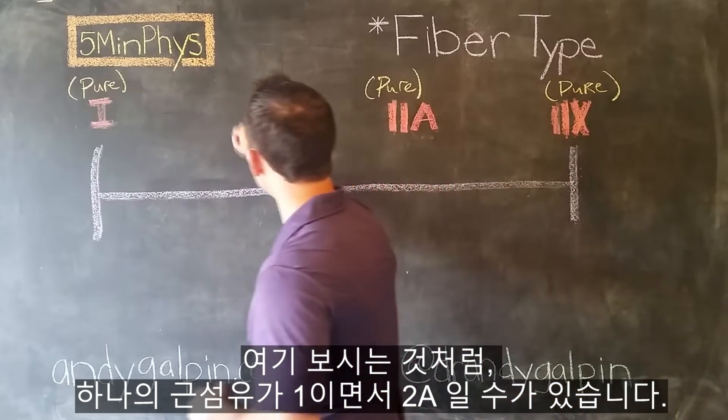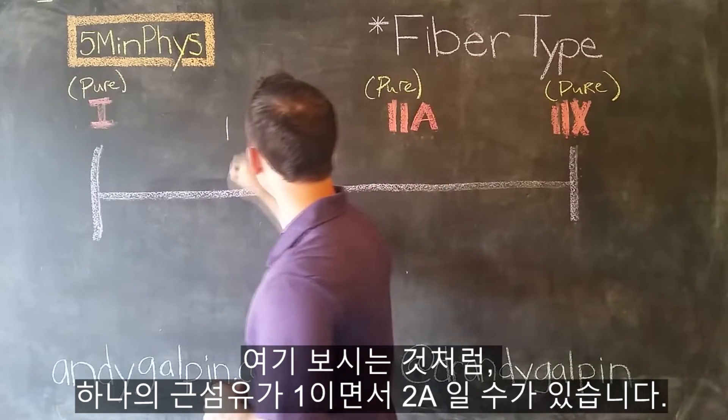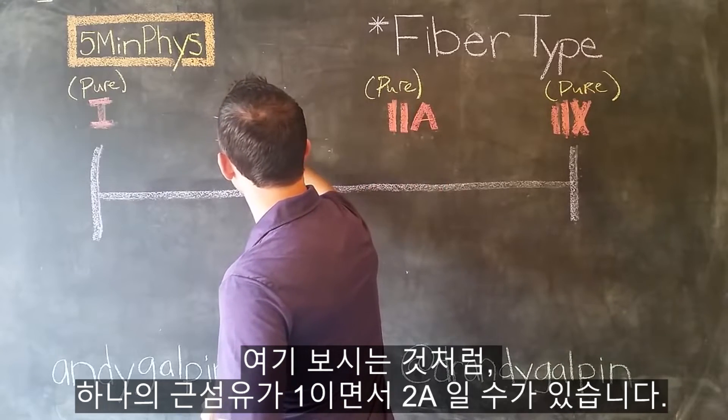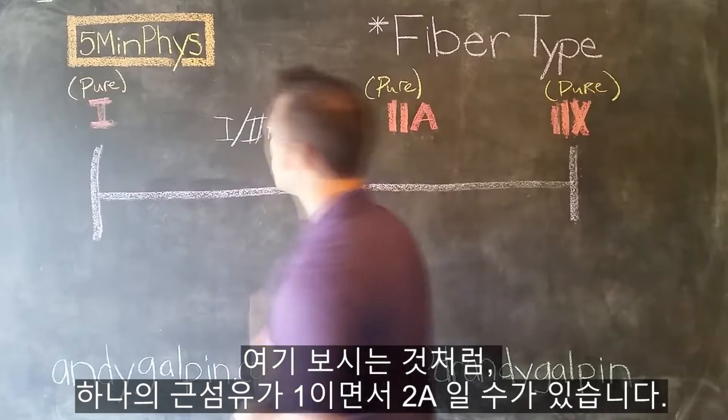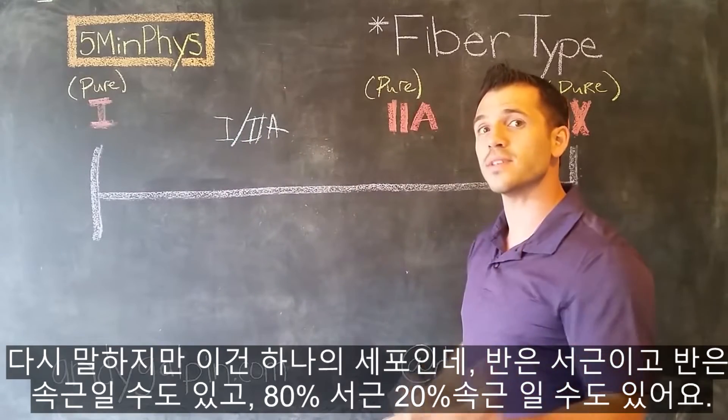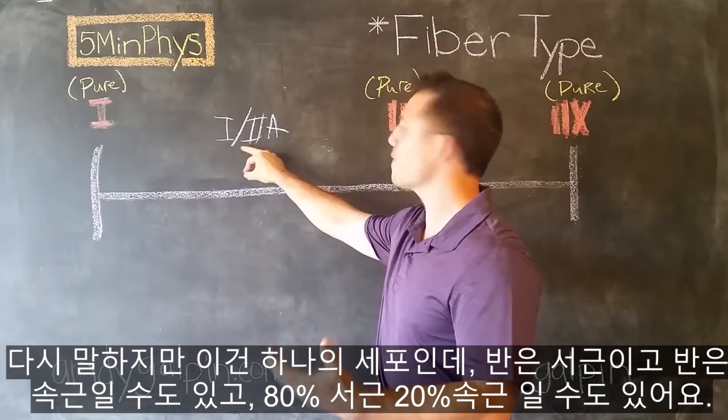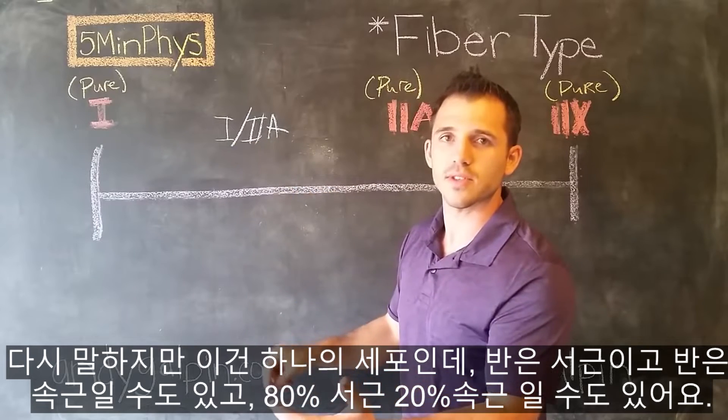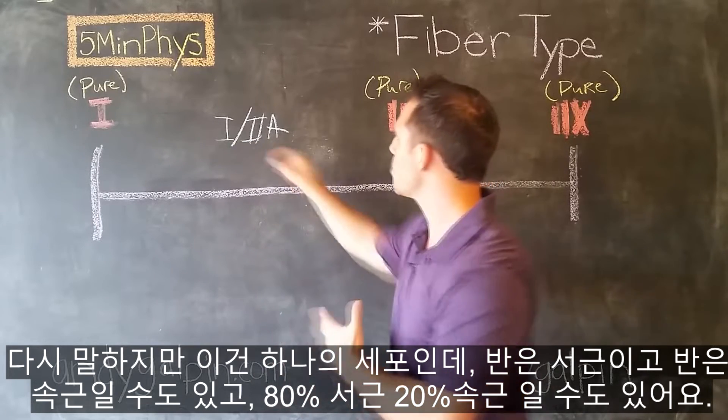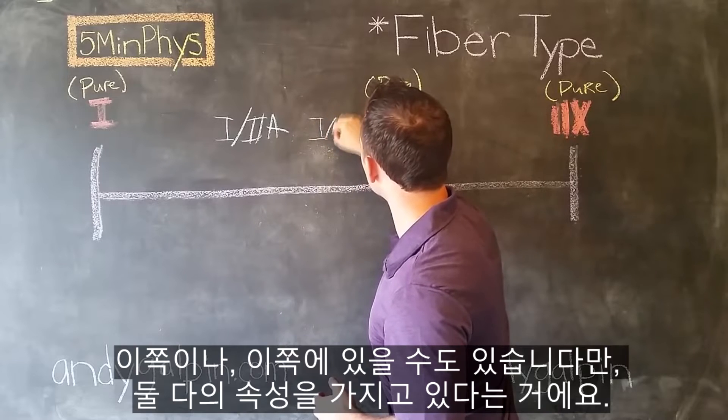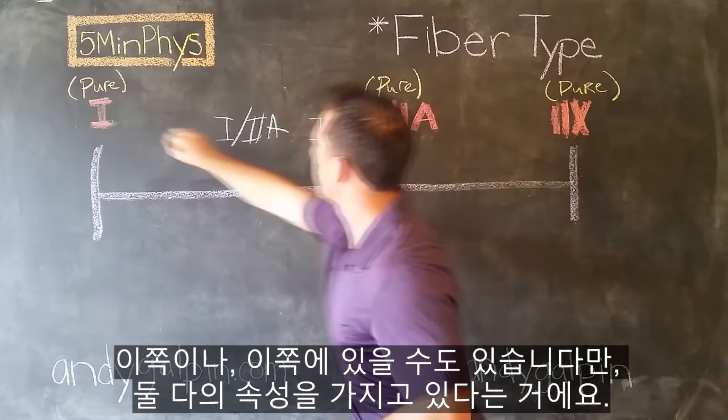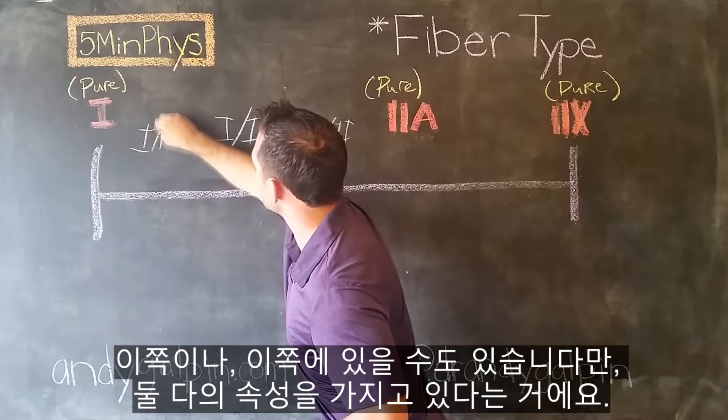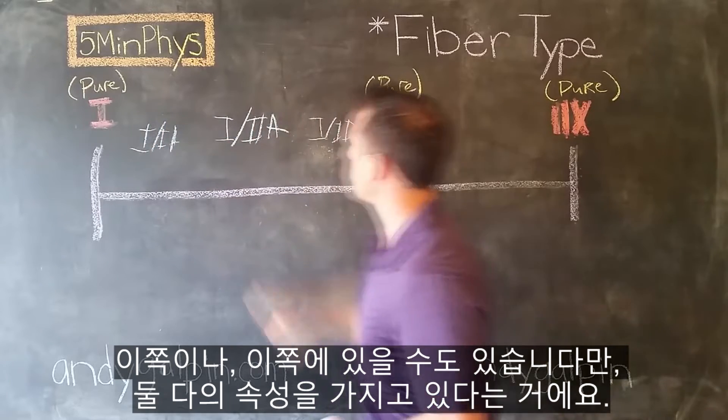Or it could be both fast twitch and mega fast twitch. So this could be where you could have one individual muscle fiber that would be 1, 2A. This is one cell, and it could be half fast and half slow, or 80% slow and 20% faster, or somewhere along the spectrum.